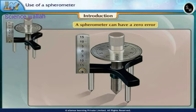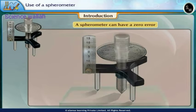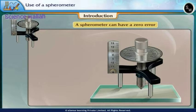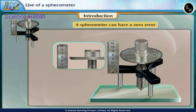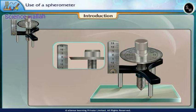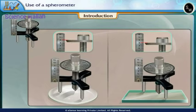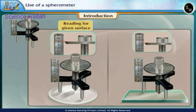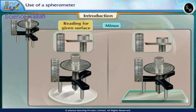A spherometer can have a zero error which corresponds to the reading when all four tips, those of the legs and screw, touch a plain surface. In practice, a measurement corresponds to the observed reading for a given surface minus that for the plain surface.